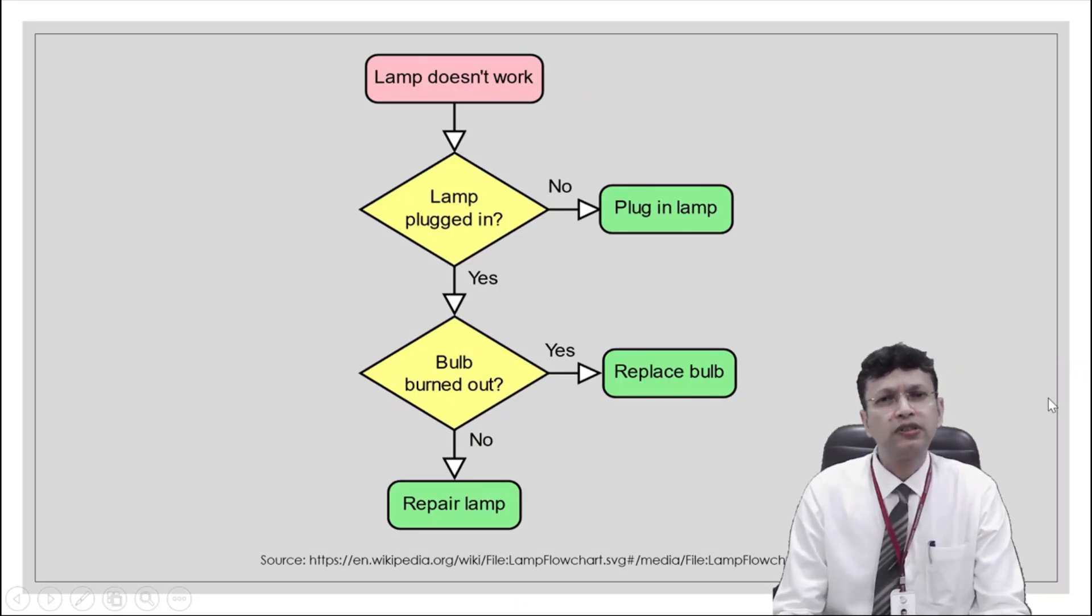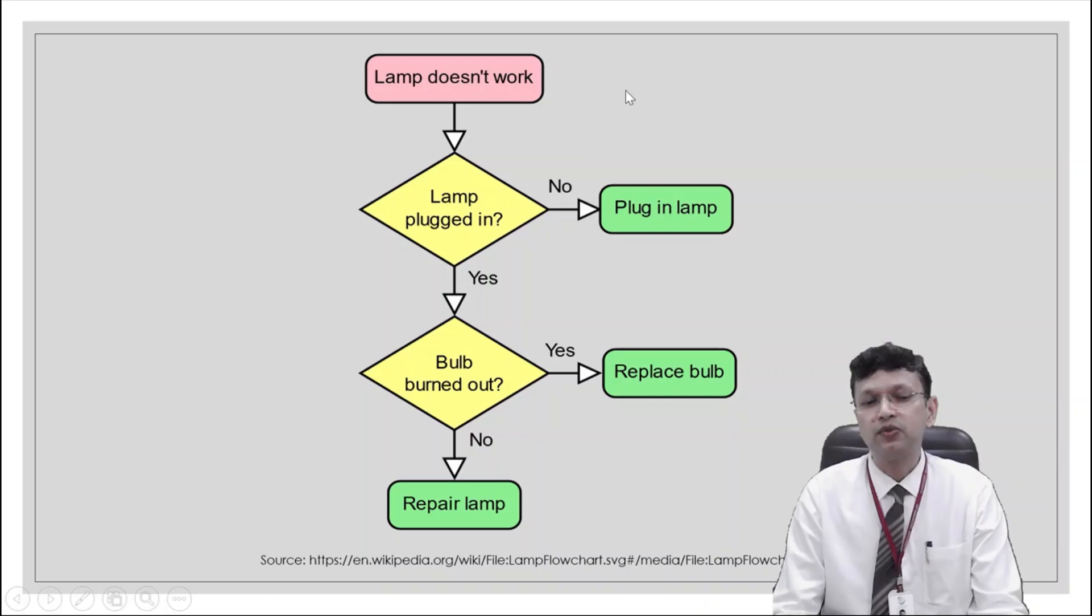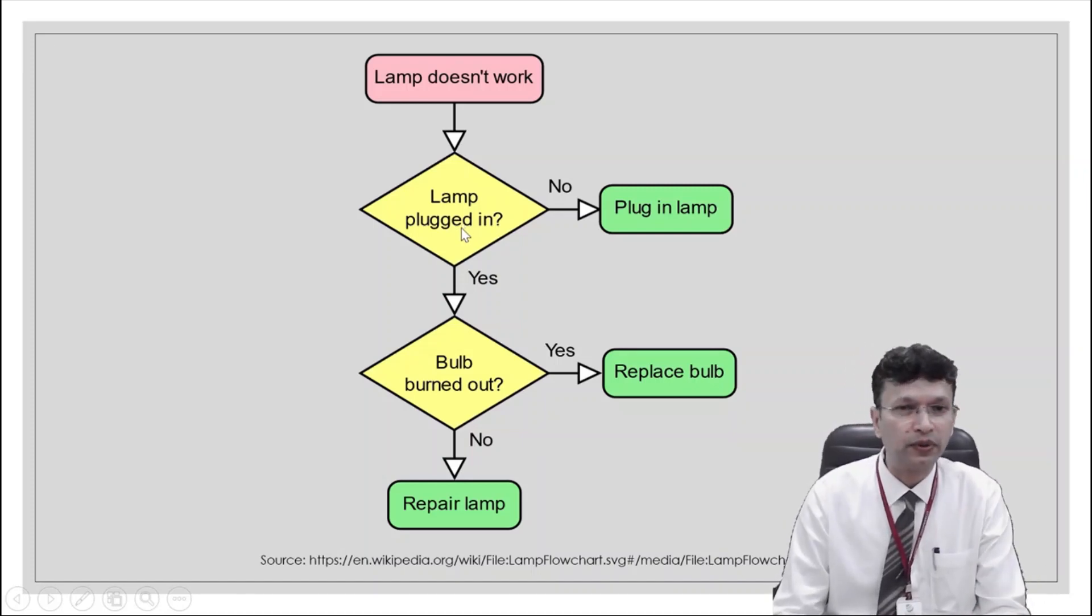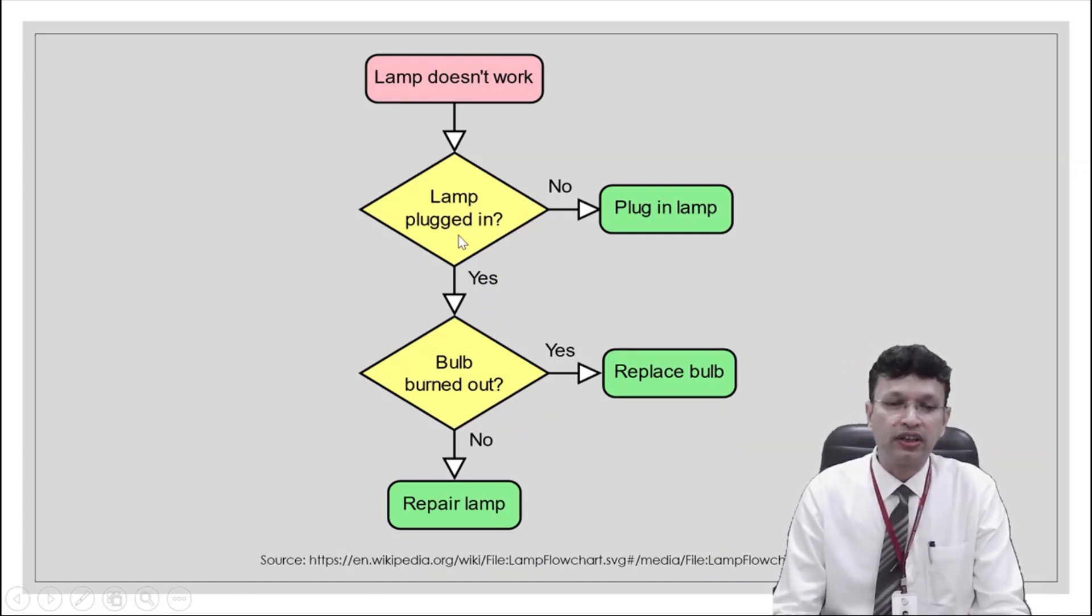So how does flowchart look like? This is an example which you can see on the screen. Like you can read out the first box which says lamp doesn't work. Now in case lamp doesn't work we need to find out why it is not working. So what we can do, we can decide upon a question like is lamp plugged in? It can have two answers like yes and no.